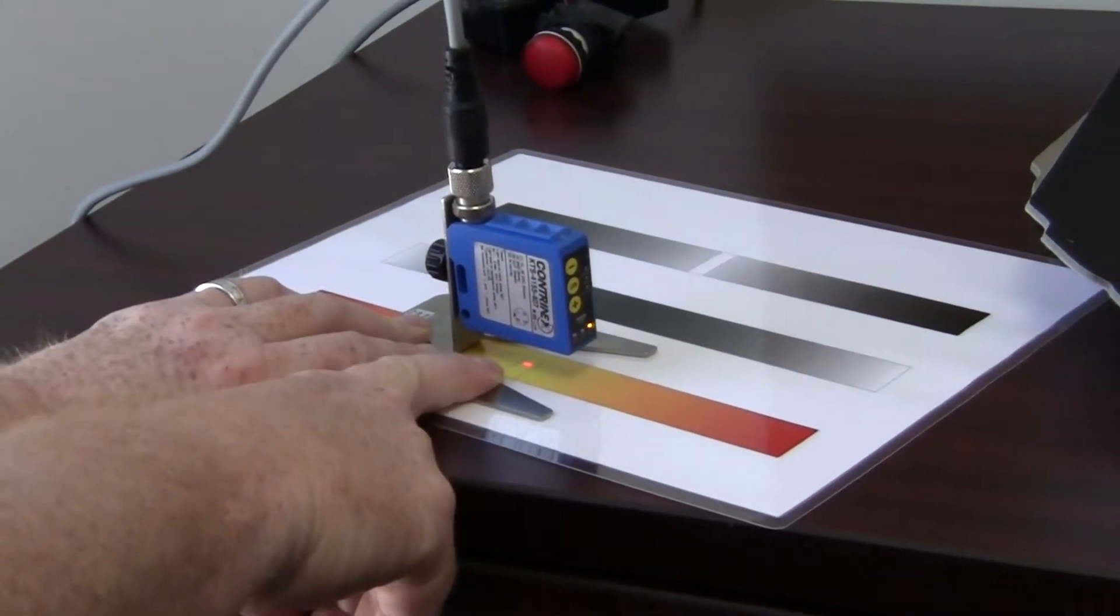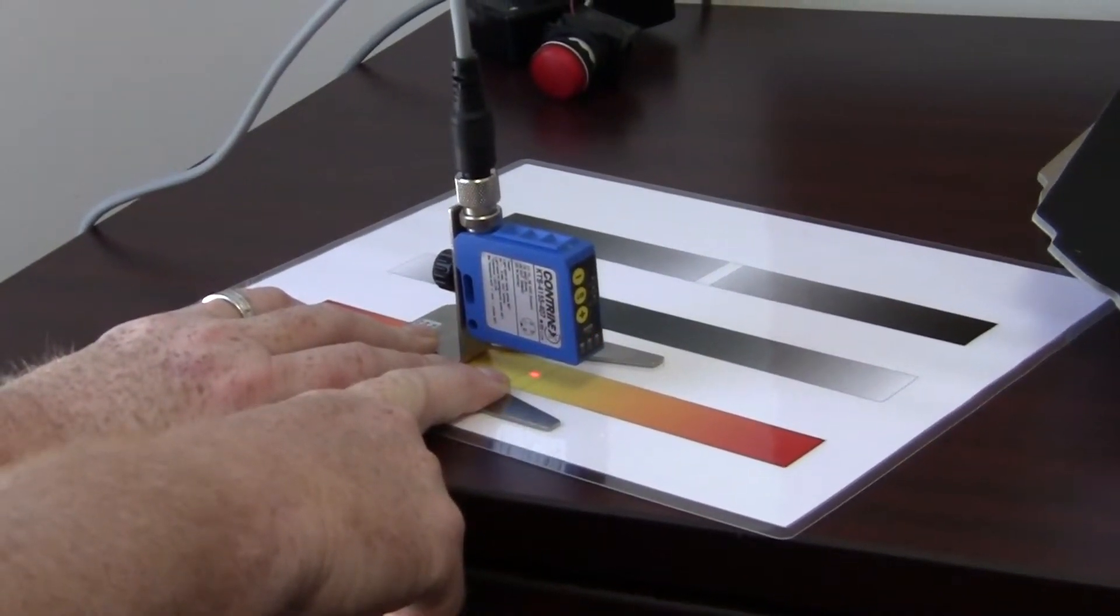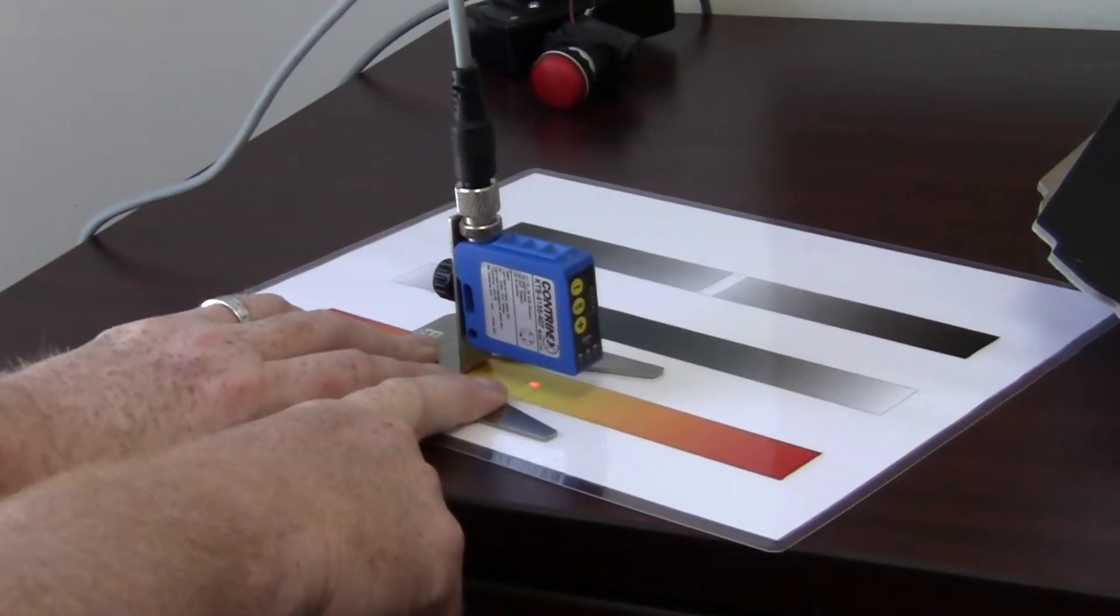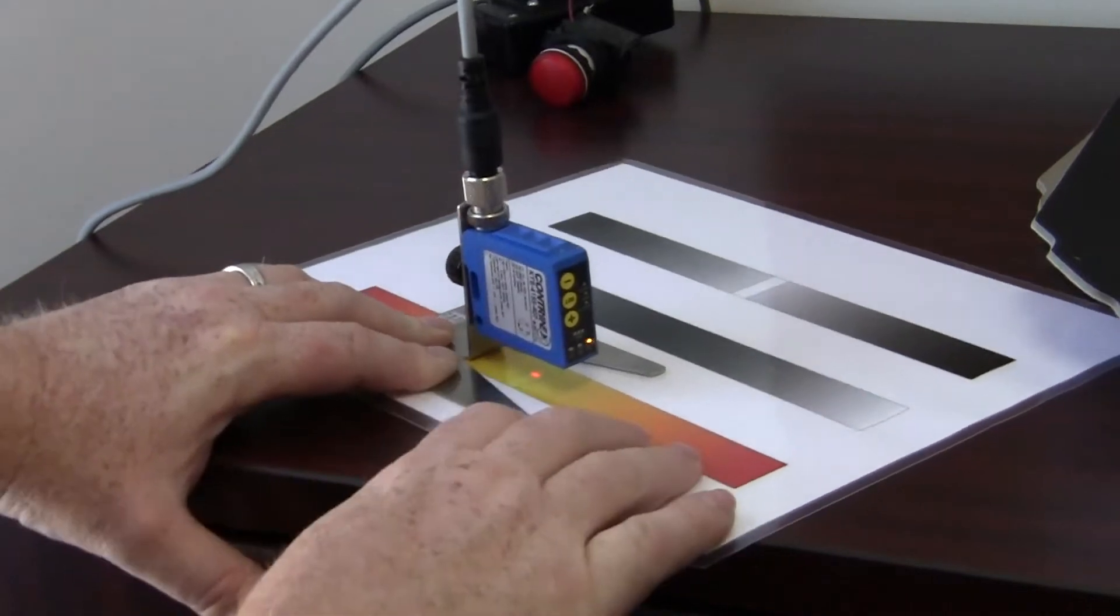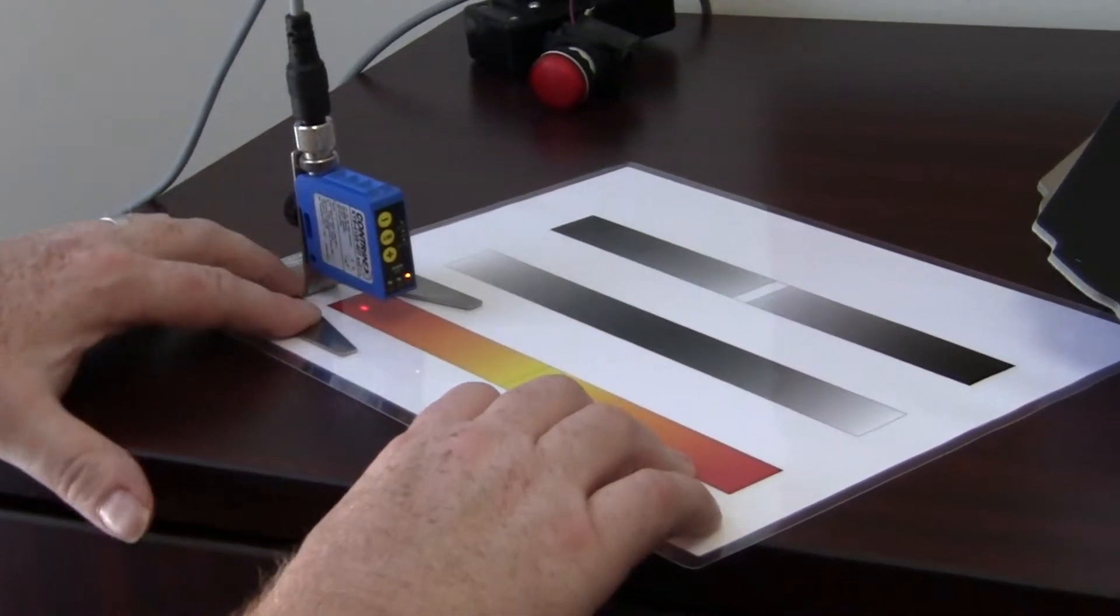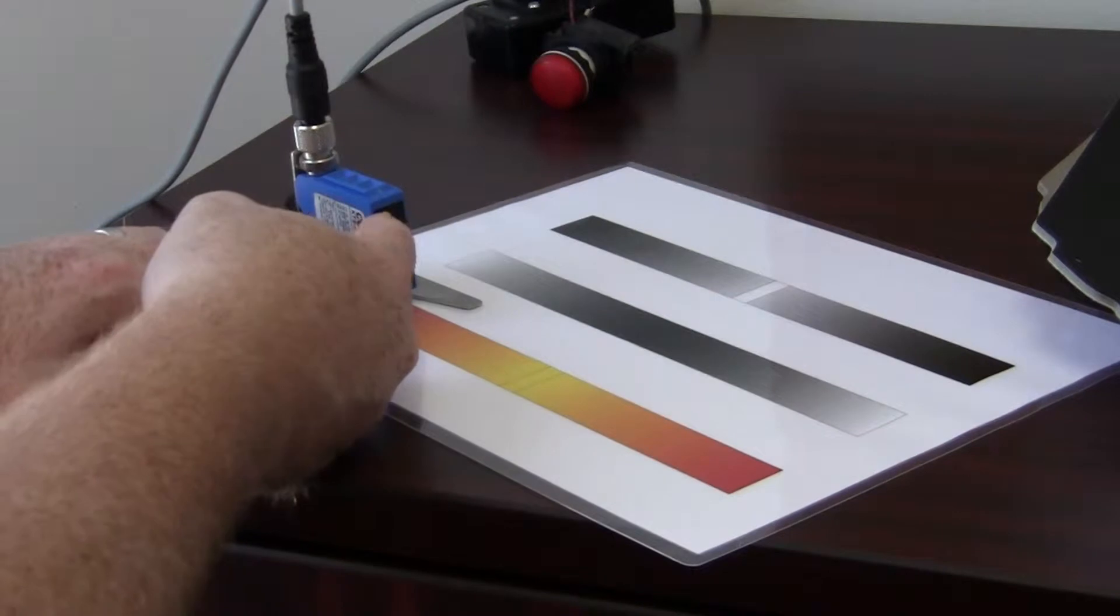Once you've done that, you'll notice that it automatically detects what color it wants to use to discriminate. It has set that spot, you'll move it back to its background position. Press set again.